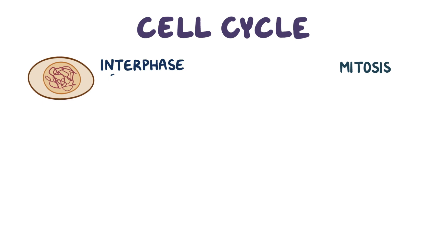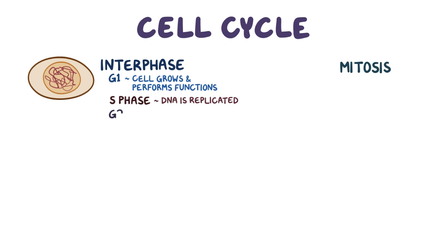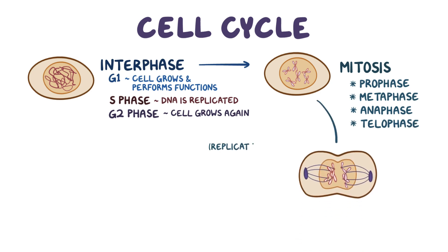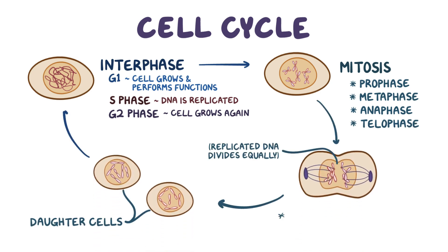As a quick recap, the cell cycle can be divided into two phases: interphase and mitosis. Interphase comprises the G1 phase, during which the cell grows and performs its cell functions; the S phase, during which DNA is replicated; and the G2 phase, during which the cell grows again before entering mitosis. Mitosis can be broken down into prophase, metaphase, anaphase, and telophase, during which the replicated DNA divides equally for the two daughter cells, and ends with cytokinesis, which is when the cell membrane actually divides to form the two new cells.